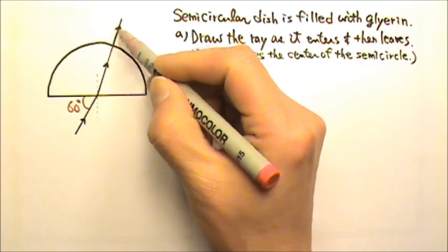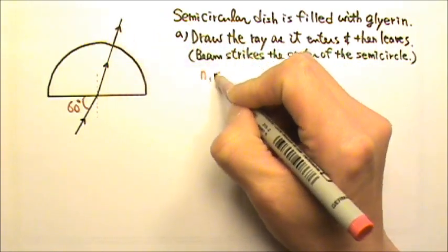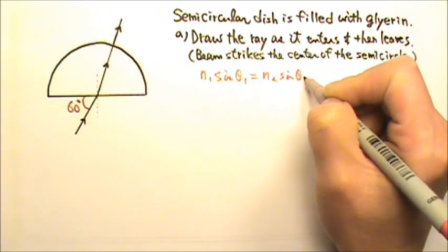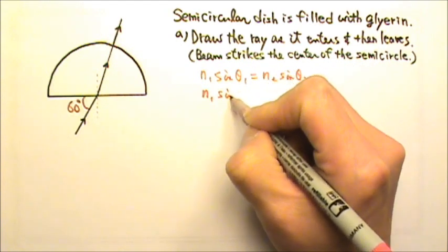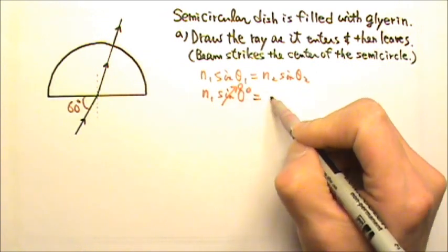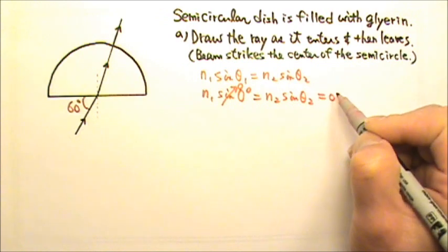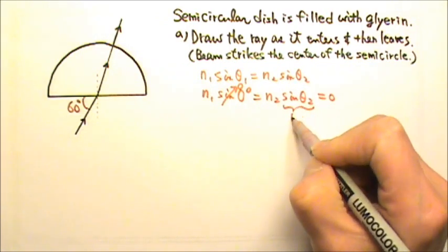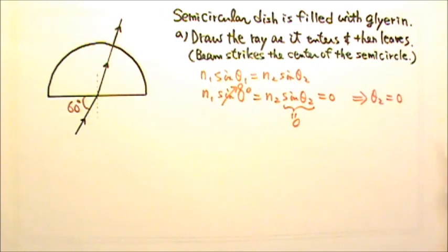Because for this refraction, the angle of incidence is 0. And N1 sine theta 1 equals N2 sine theta 2. And the theta 1 is 0, and sine 0 degrees is 0. That means N2 sine theta 2 also has to be 0. N2 cannot be 0, that means sine theta 2 has to be 0. This means theta 2 also has to be 0.